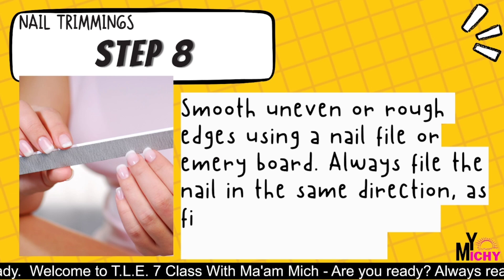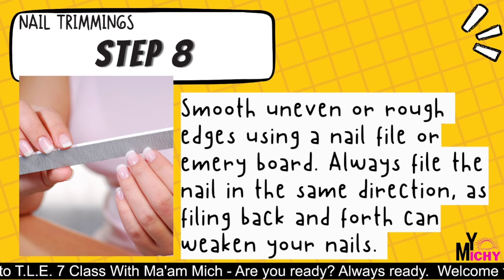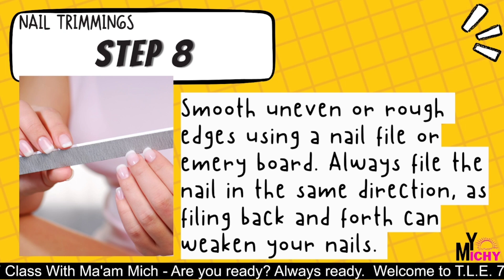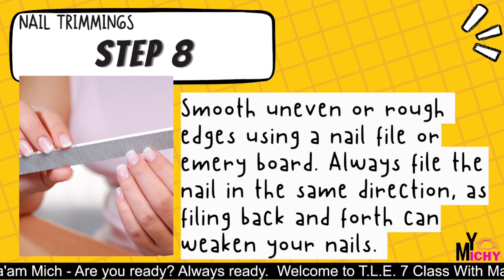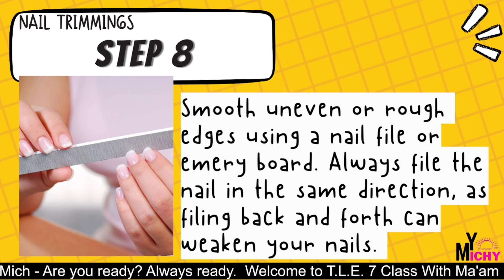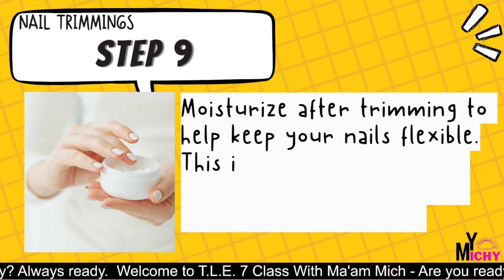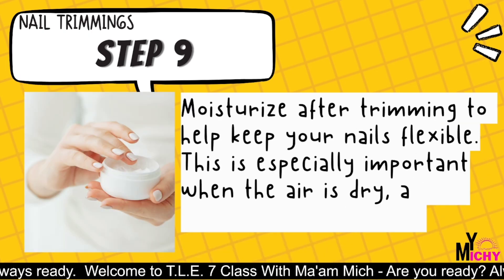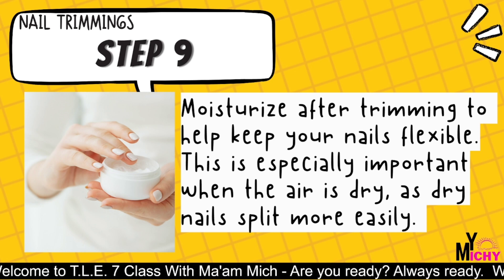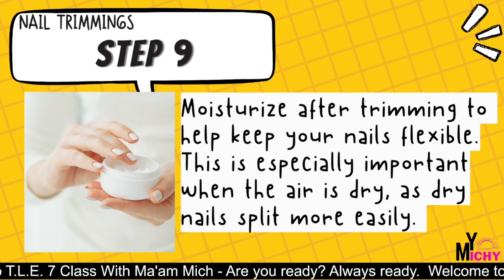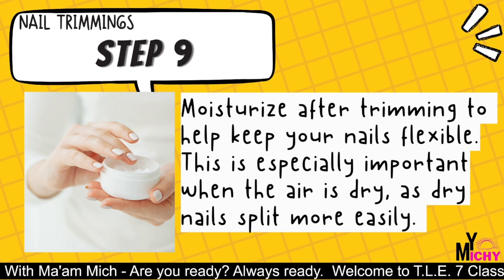Step 7: make at least 2 or 3 cuts per fingernail. Follow the curve of the nail to get a clean cut; check for skin snags after each cut and remove carefully. Step 8: smooth uneven or rough edges using a nail file or emery board. Always file the nail in the same direction, as filing back and forth can weaken your nails. Step 9: moisturize after trimming to help keep your nails flexible — especially important when the air is dry, as dry nails split more easily.